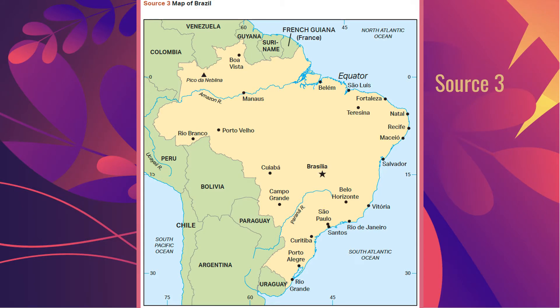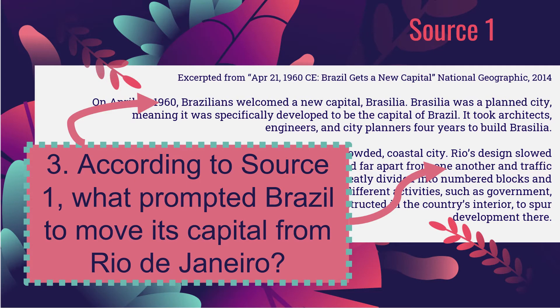Source three is a map of Brazil. Brazil is located in South America — everything in yellow on this map shows Brazil. Go ahead, pause the video and take a moment to record what you see, think, and wonder.